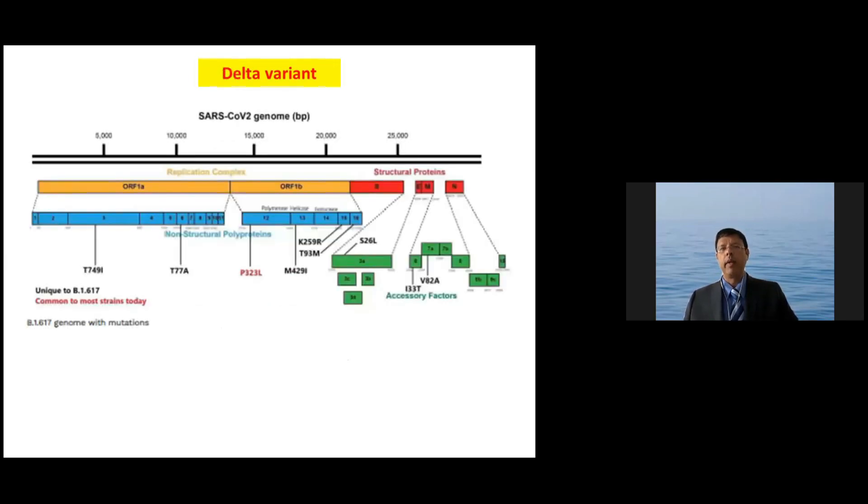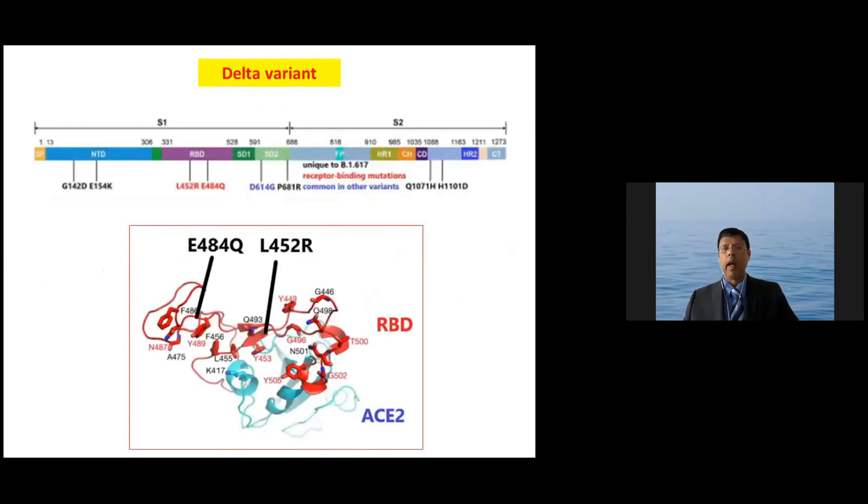I've discussed the delta variant previously with you, the original Indian variant. There are a number of mutations, including two important mutations in the receptor binding domain, as shown in the figure given there. And the important mutation in the receptor binding domain is the E484Q and the L452R. And that was why it was originally called the double variant or the double mutation variant.